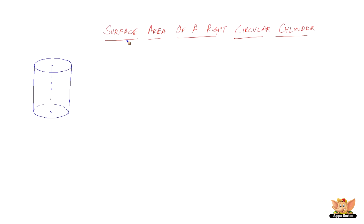When we say the surface area, we mean the total surface area — what is the area of the two bases and what is the area of the walls of the cylinder? So to find out the total surface area, we first need the areas of the circular ends, and then we also need the area of the wall surrounding the cylinder, or this curved surface. Now let us first find out the area of the circular bases. Each base surface area will be equal to πr² square units.